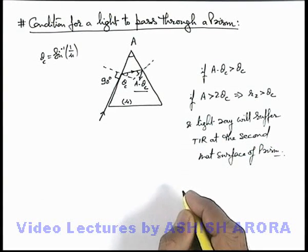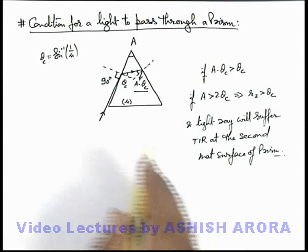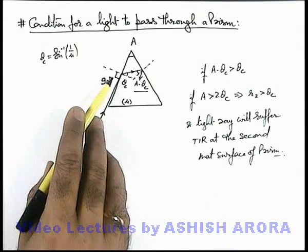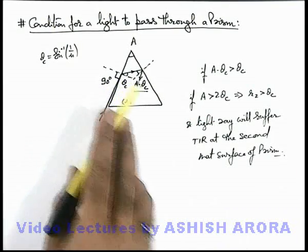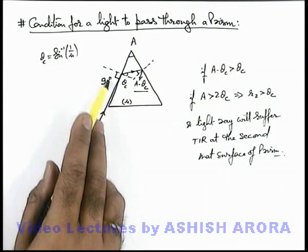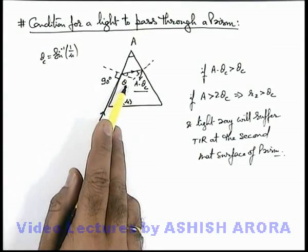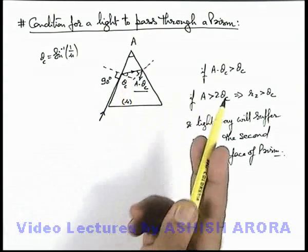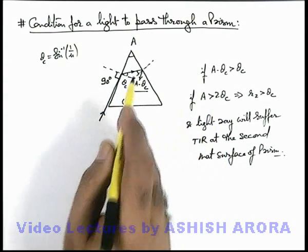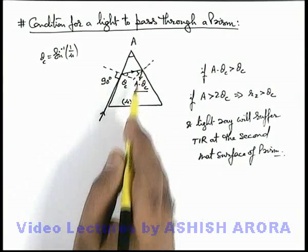So in this situation we can see, if the incident ray is in a grazing manner and the other angle is more than the critical angle, then for all values of angle of incidence less than 90 degrees, this value will be less than theta c and this value will certainly be more than theta c. So light will always suffer TIR on the other face.